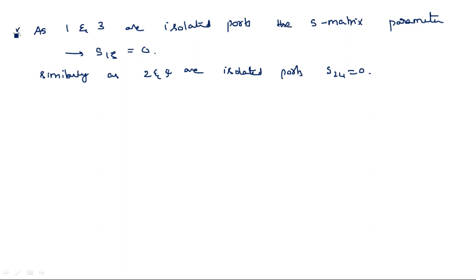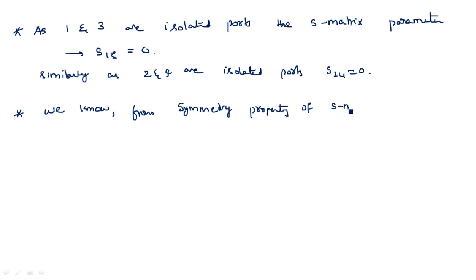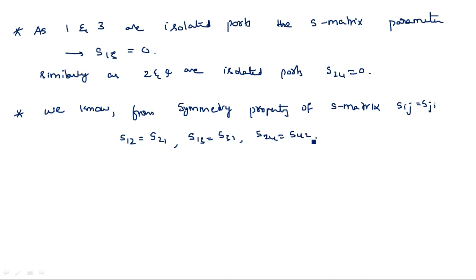This is the first condition to derive the S-matrix parameters. The second condition comes from the symmetry property of the S-matrix, where Sᵢⱼ equals Sⱼᵢ. So S₁₂ equals S₂₁, S₁₃ equals S₃₁, S₂₄ equals S₄₂, and S₂₃ equals S₃₂. These are the symmetry property outcomes.